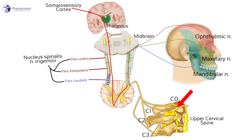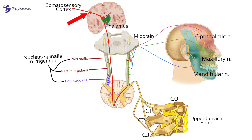So when the efferent nociceptive stimulus from the neck travels to the second order neuron in the dorsal horn at segment C1-C2 and finally reaches the somatosensory cortex, this part of the brain has to figure out the origin of the stimulus. In this case, the brain makes a projection error and decides that the nociceptive stimulus must be coming from the area with the higher nociceptive efferent innervation, which is the face rather than the poorly innervated upper cervical area. In other words, the brain projects pain into the frontal orbital area of the head.